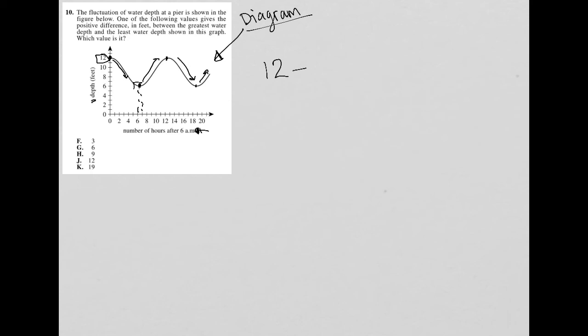So we also discovered, or we can see here that the least water depth here is six. Yes, looks like that is straight with six. So it should just be 12 minus six here. Which value is it? Well, this seems as simple as just saying 12 minus six equals six. And therefore the correct answer here is choice G.